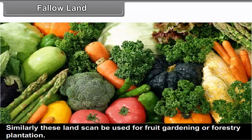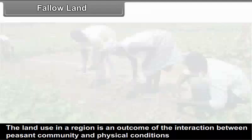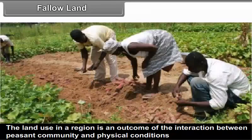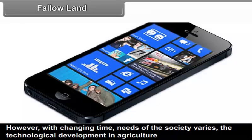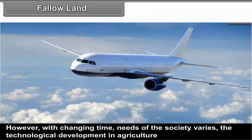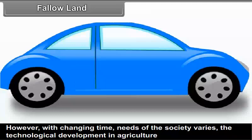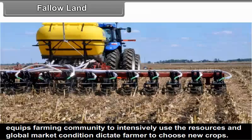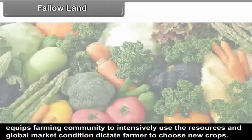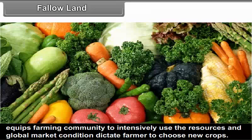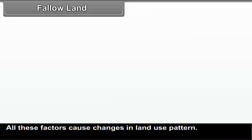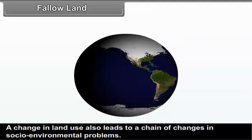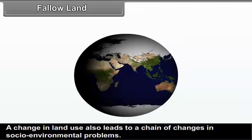These lands can also be used for fruit gardening or forestry plantation. The land use in a region is an outcome of the interaction between peasant community and physical conditions controlling aggregate activity. With changing time, needs of the society vary. The technological development in agriculture equips the farming community to intensively use the resources, and global market conditions dictate farmers to choose new crops. All these factors cause changes in land use pattern. A change in land use pattern also leads to a chain of changes in socio-environmental problems.